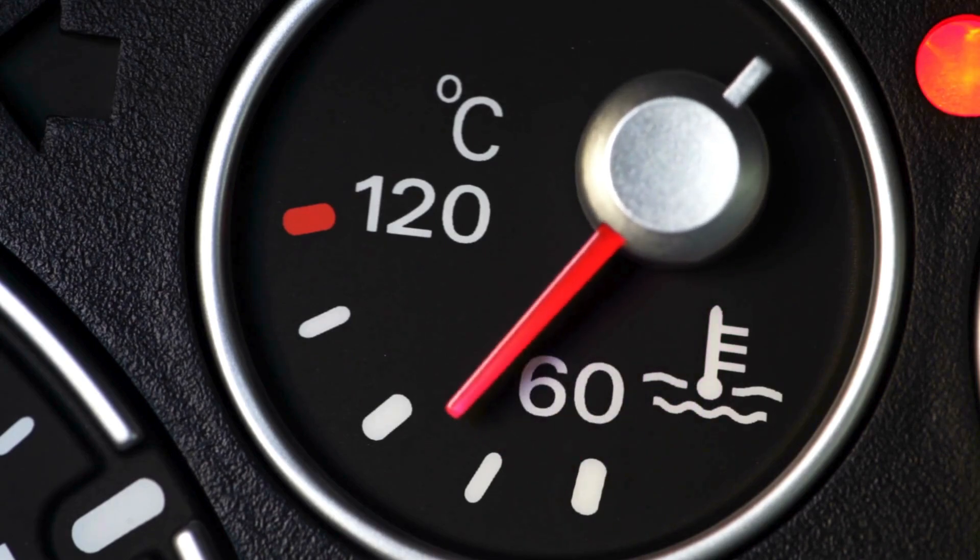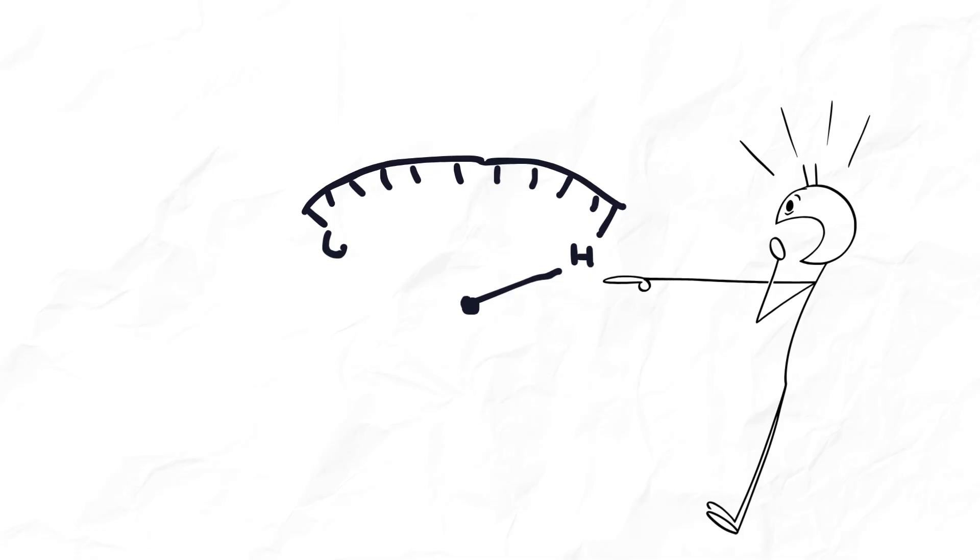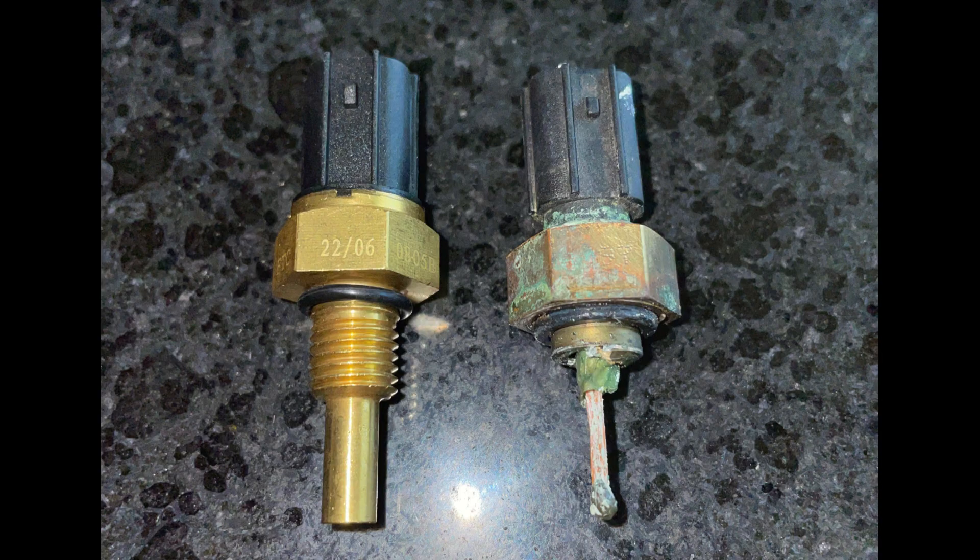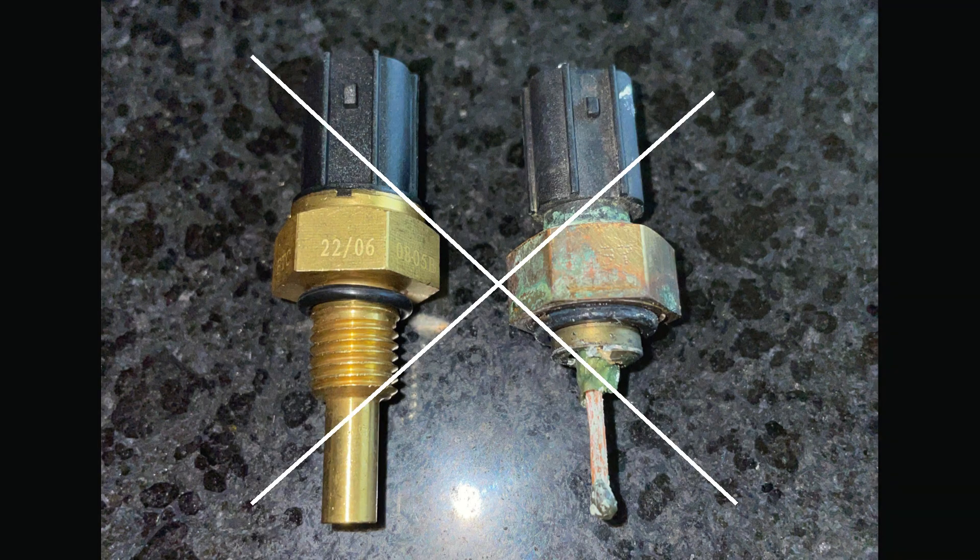Another telltale sign is fluctuations in your temperature gauge. You might see abnormally high or low temperature readings, or even the gauge dropping to the bottom. This is a clear indication that something's not right with the ECT sensor.